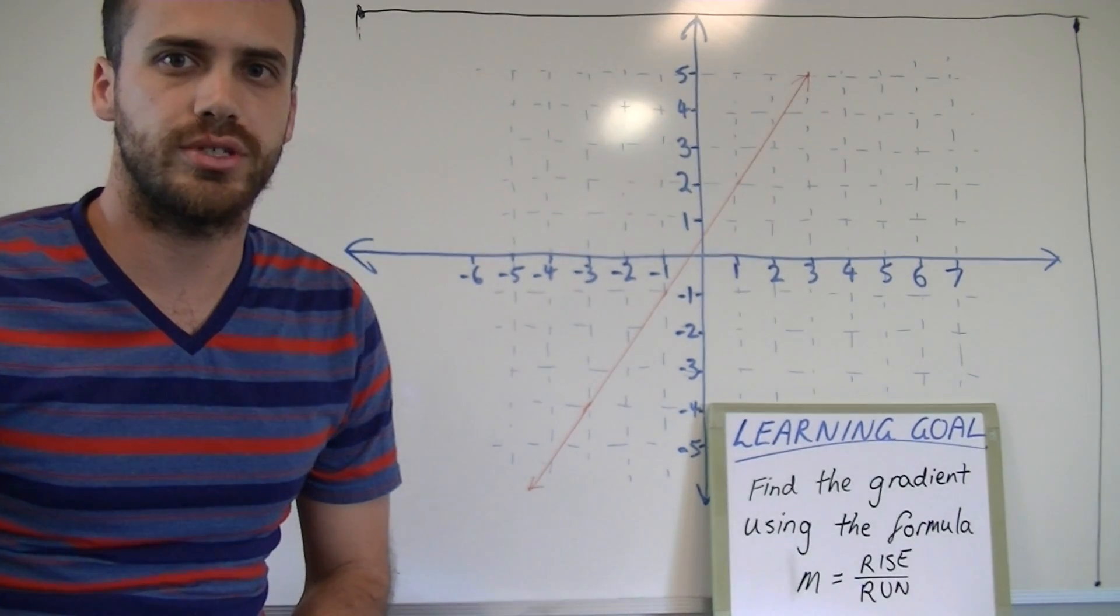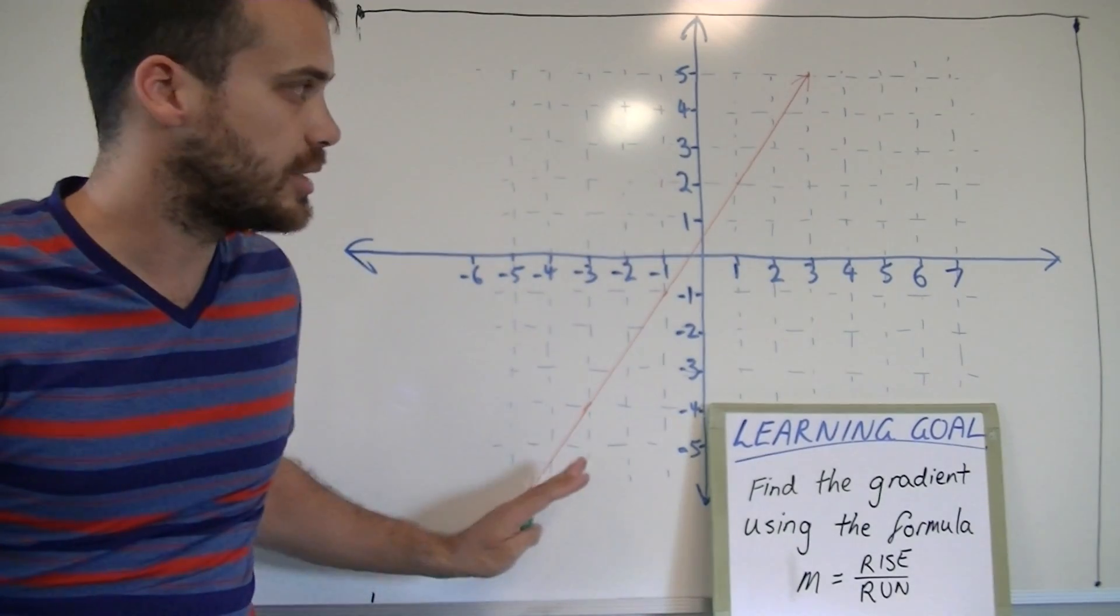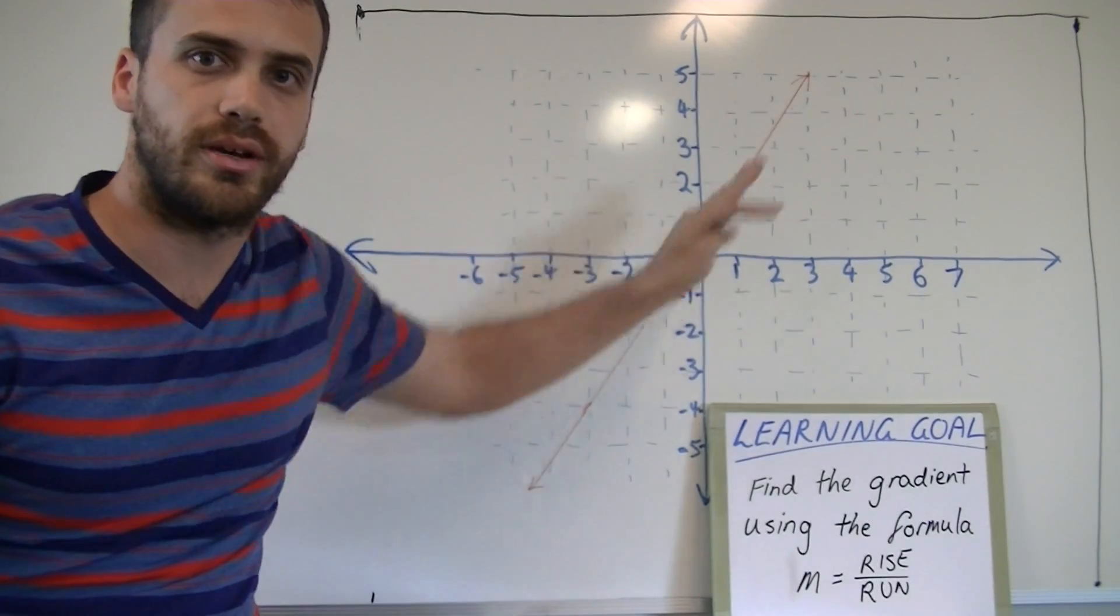Now, for most of us, this will be revision, so we're only going to run through it really quickly. Here we have our Cartesian plane, and you can see a linear equation there, a straight line.